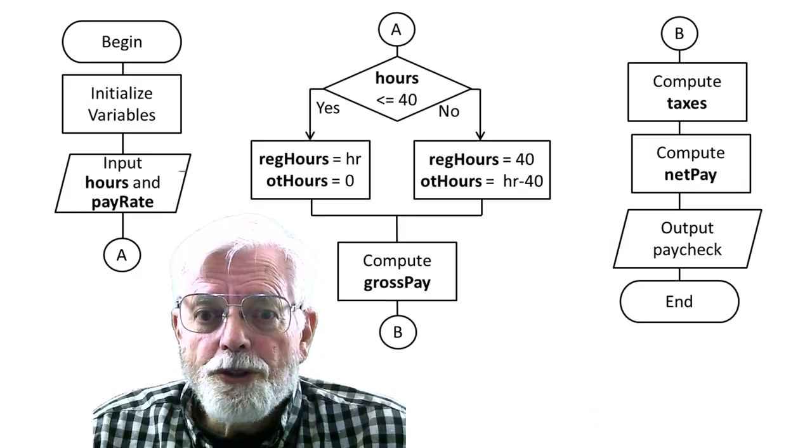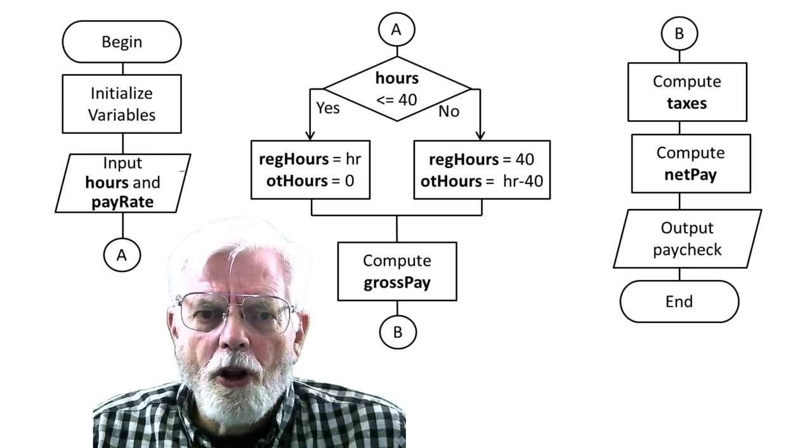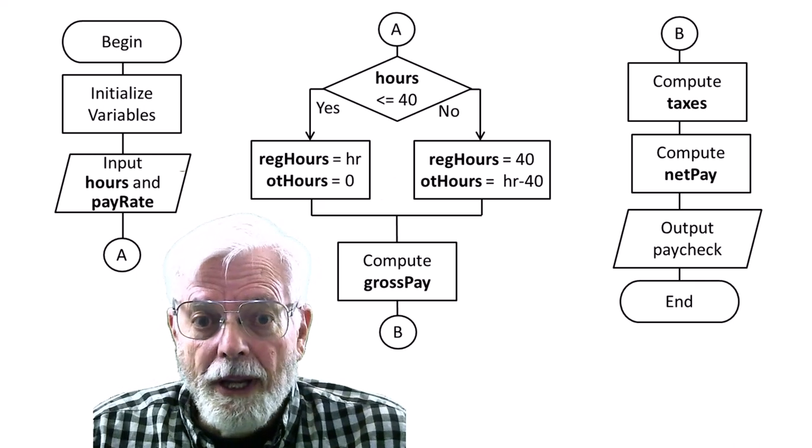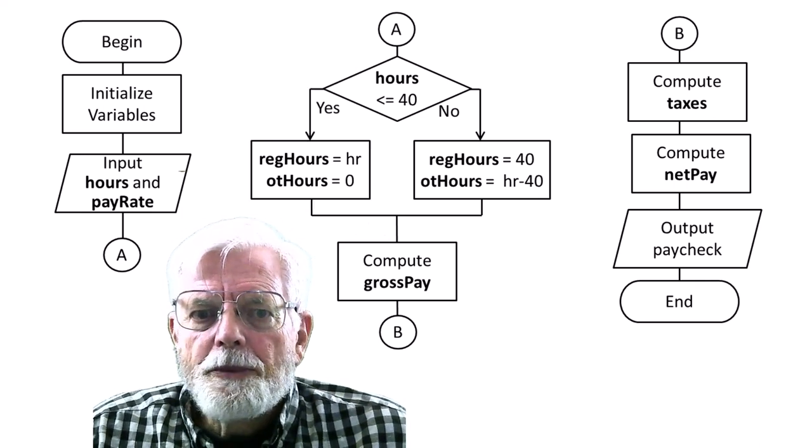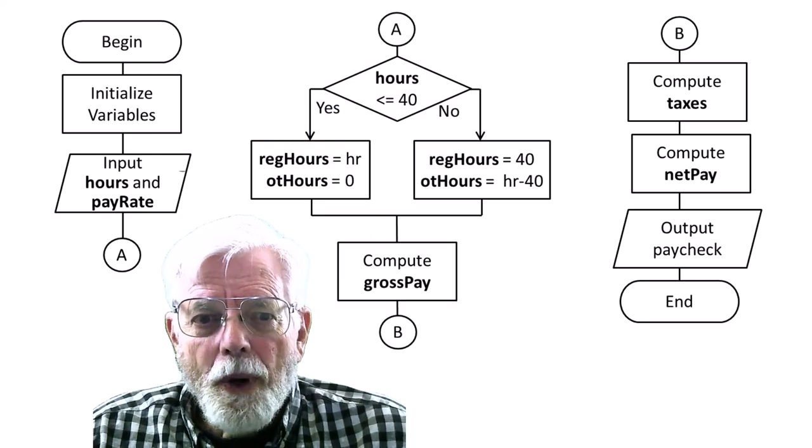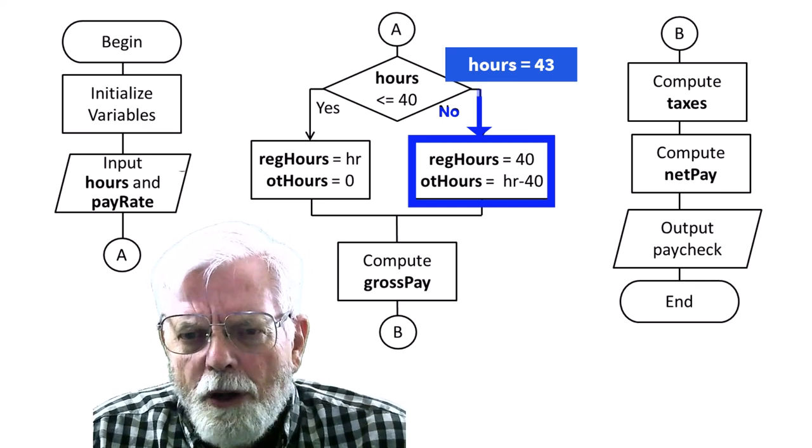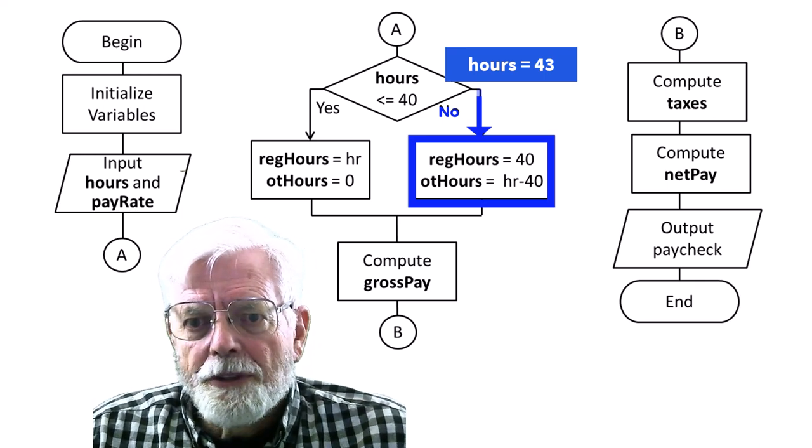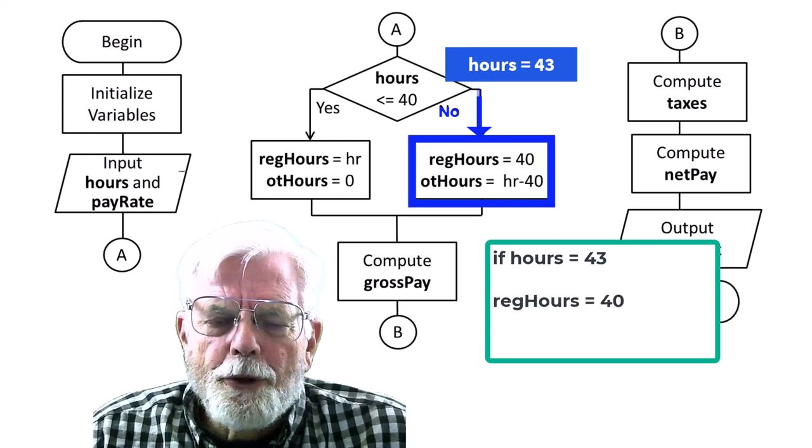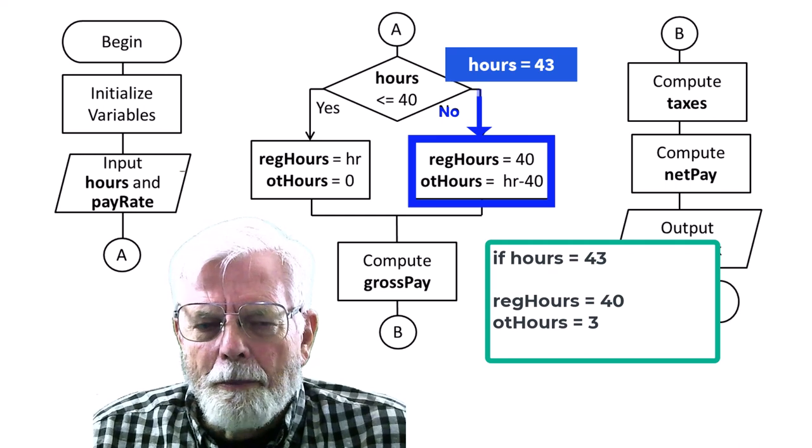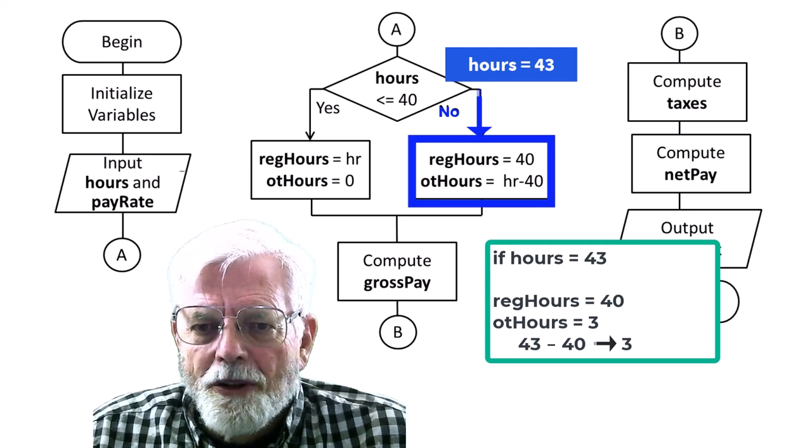I have expanded the flowchart to show more detail in computing the paycheck. The center column uses a diamond to represent the decision. The program needs to look at all the hours worked to see if they are less than or equal to 40. In this case, regular hours are set to the number of hours worked and the overtime hours are set to zero. I'm choosing to use an abbreviation and call regular hours as REG HOURS. However, if the test condition of hours are less than or equal to 40 is not true, then there's some overtime. Therefore, we set the regular hours to 40 and set the overtime hours to anything over 40. If hours is 43, then the person worked 40 hours at regular pay and had 3 hours of overtime. Overtime hours equal hours minus 40, which is 3. I can also call overtime hours as OT hours.